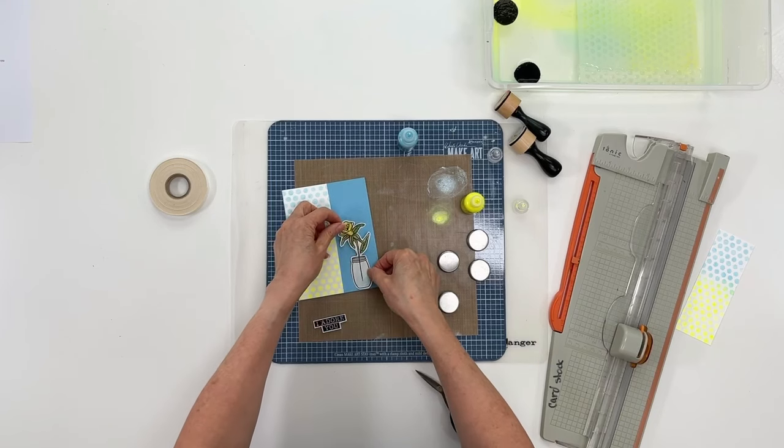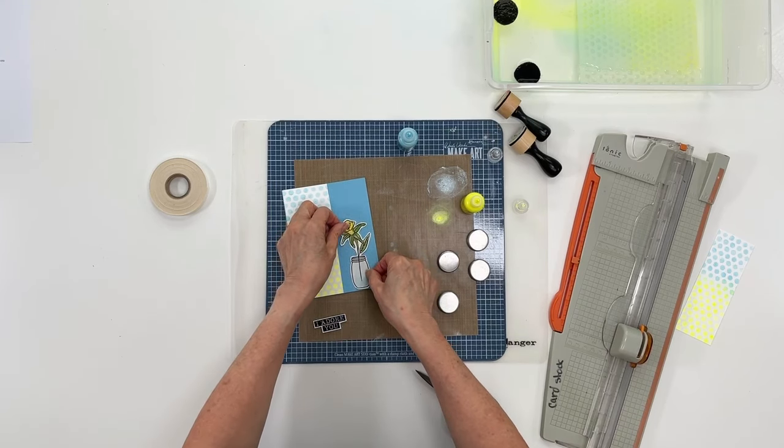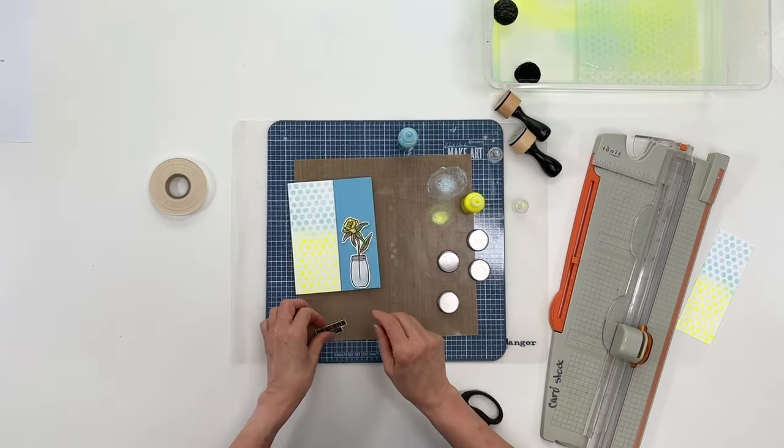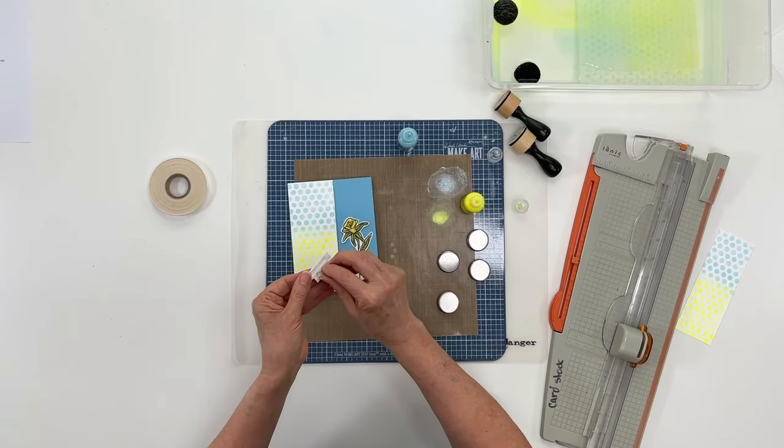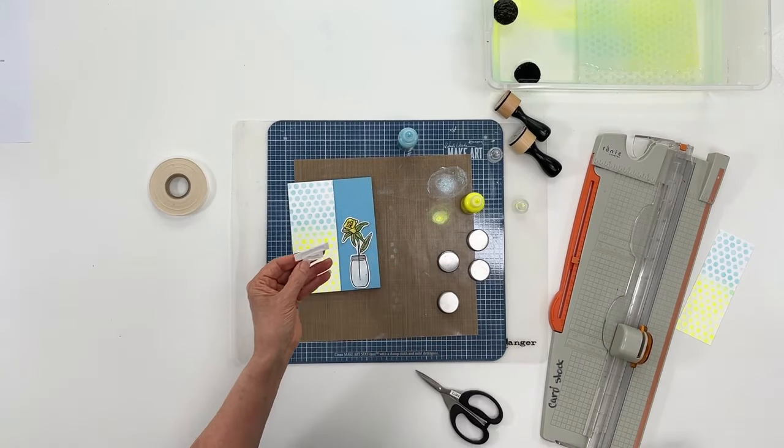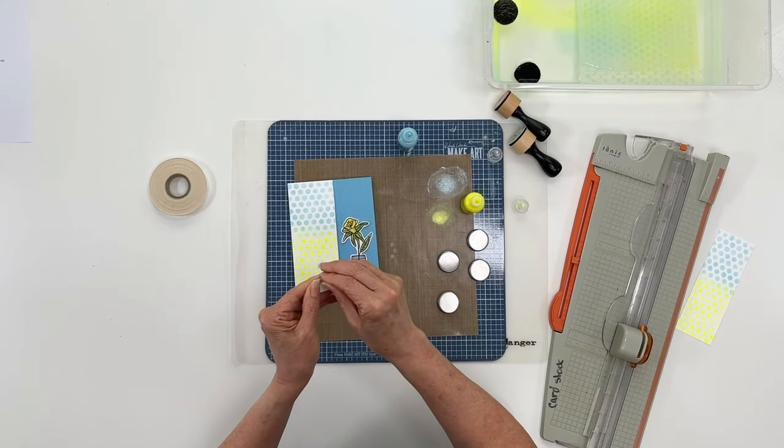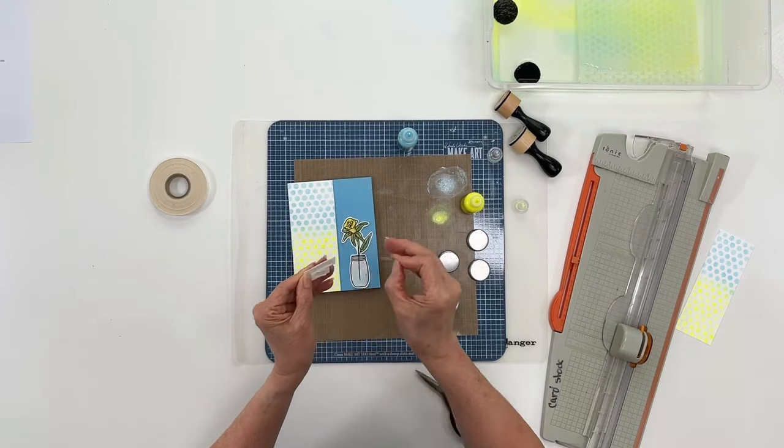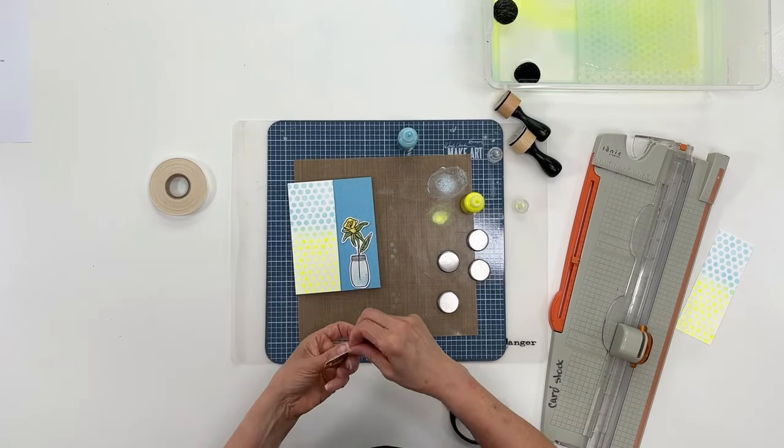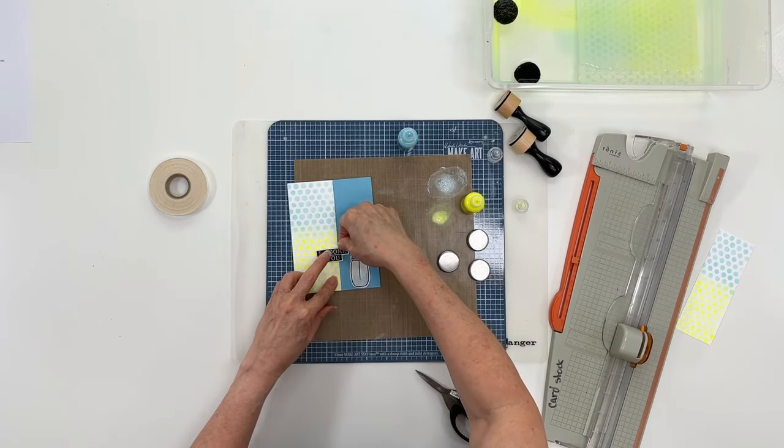We want to put this sitting at the bottom because we don't want it floating. We want it to sit on something. Then I use double-sided dimensional clear adhesive for my sentiment just to give it a little bit of lift and interest. I'll stick it right here.